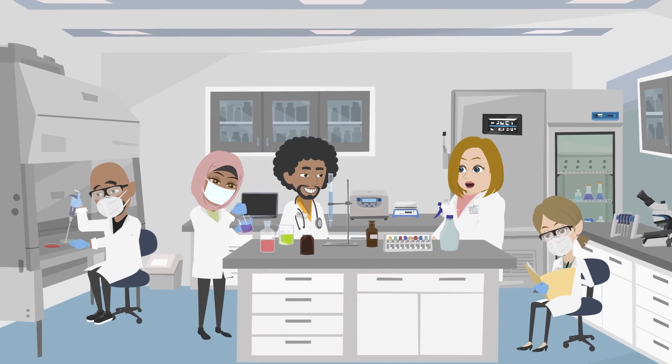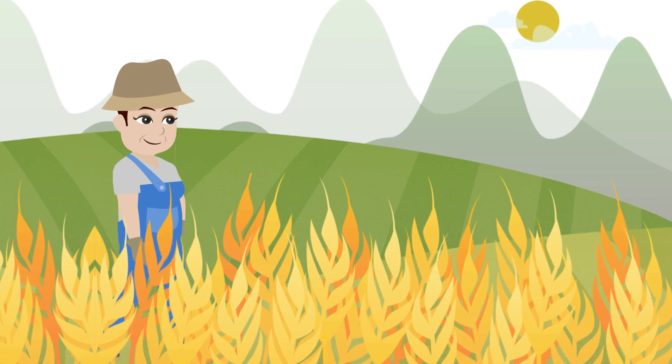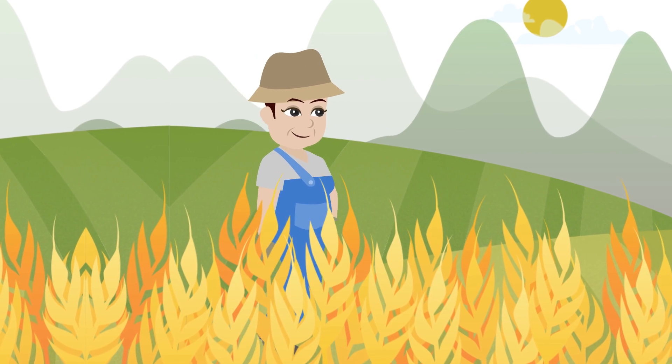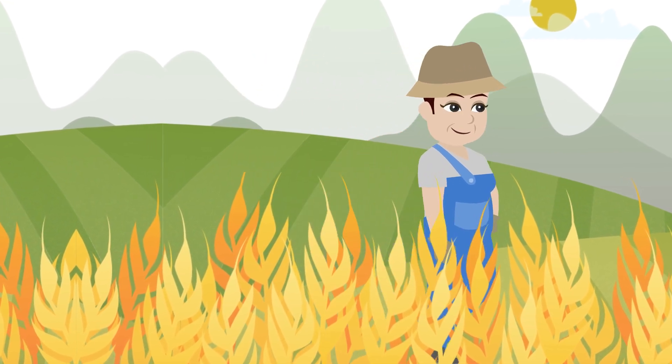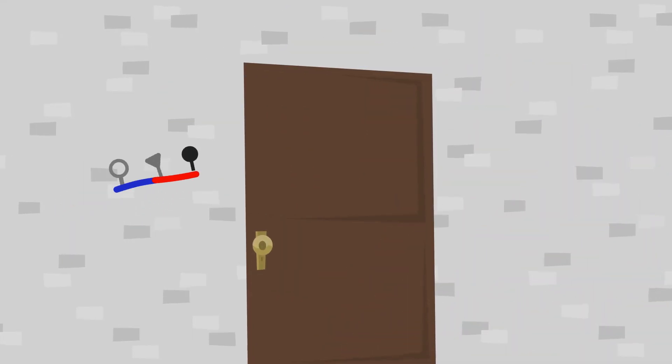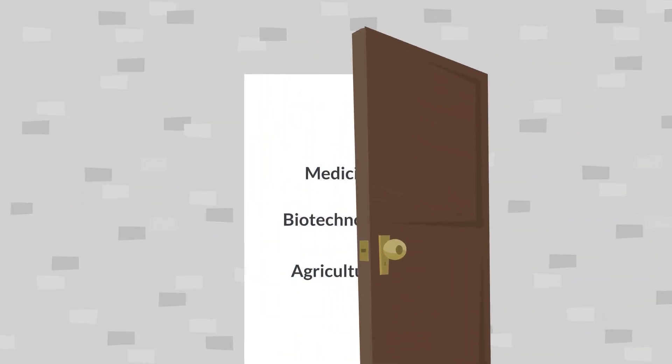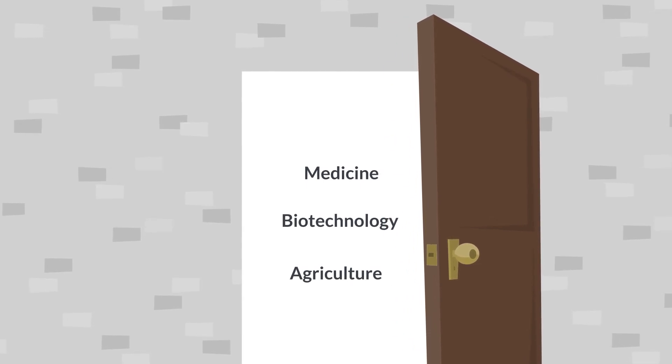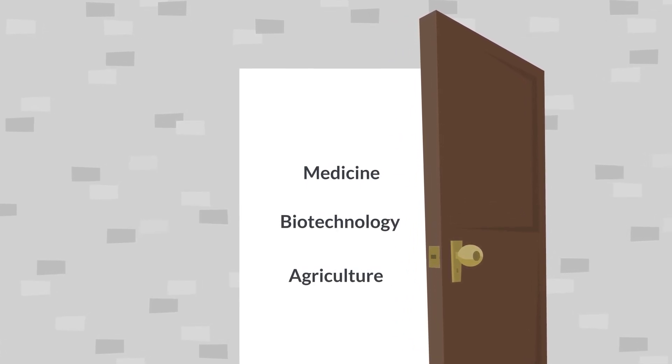Scientists can also engineer RNA modifications to increase agricultural productivity and improve the drought resistance of crops like potatoes and rice. However, unlocking the potential of RNA modifications requires advances in sequencing RNA and its modifications.